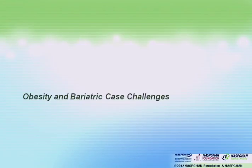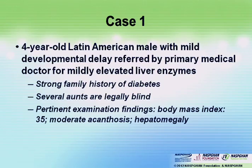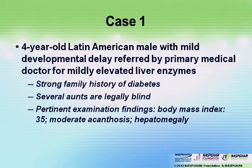Case one: Jose, a four-year-old with a history of mild developmental delay referred by his PCP for mildly elevated liver enzymes. There is a strong family history of diabetes, and several of his aunts are legally blind. On physical exam, he has a BMI of 35, moderate acanthosis, and some hepatomegaly. The question is: what is the most appropriate next step for this patient?